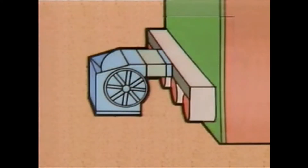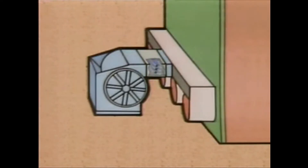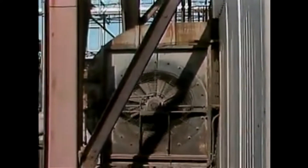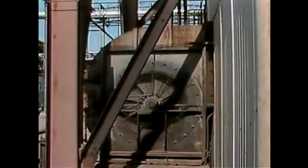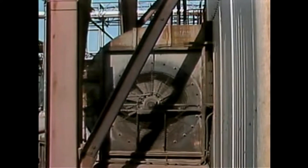Some force draft fans have dampers or louvers on the discharge side of the fan. These dampers can be opened or closed to allow more or less air to flow into the furnace. On other types of force draft fans, the dampers are located on the inlet side. Adjusting the inlet dampers increases or decreases the amount of air that is admitted to the fan and into the furnace.